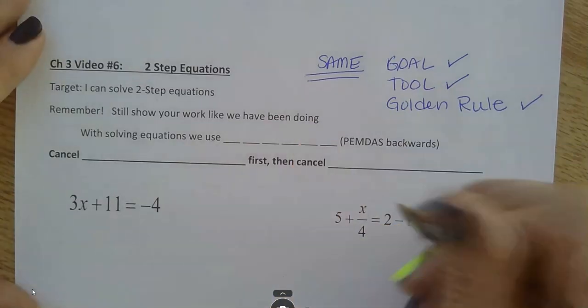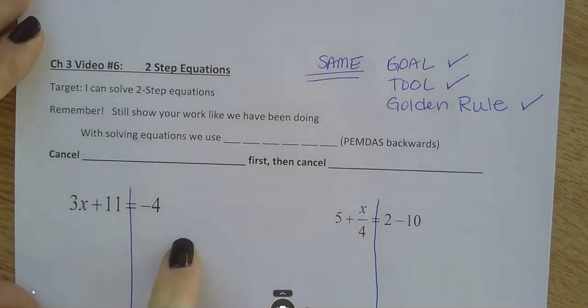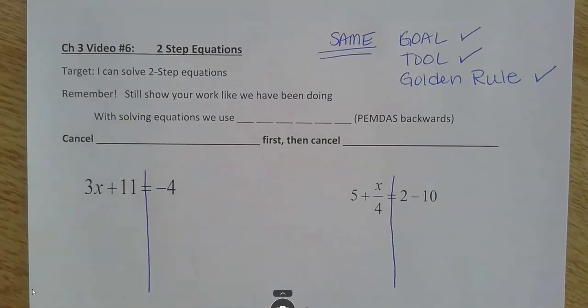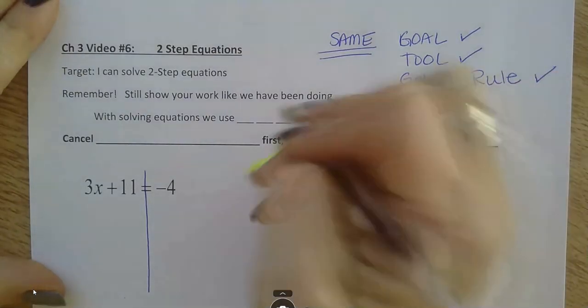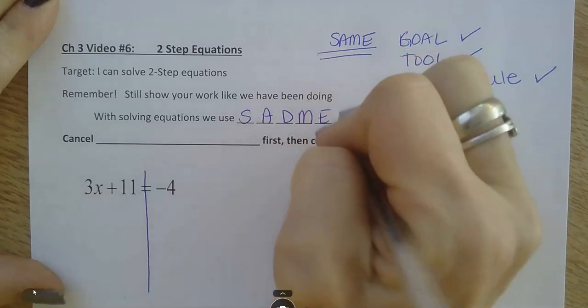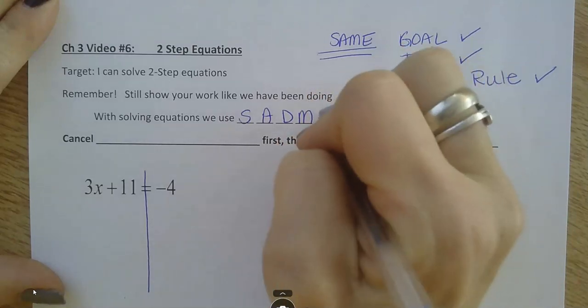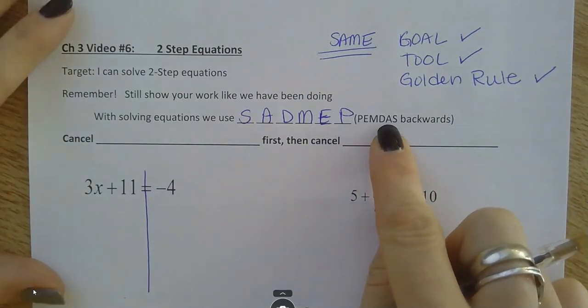And we're still showing our work like we have been. So, everything like drawing the line down the equal sign, and crossing things out, working down, all of that is still the same. I think I mentioned with one-step equations that when you're solving now, since we're working backwards and canceling things out, we are going to use SATMAP, which is a completely made-up word. It's not an actual thing. It is simply the letters of PEMDAS backwards.